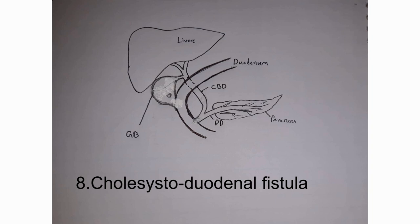However, there is also a cholecystoduodenal fistula. When the gallbladder inflammation is very severe, it creates an abnormal connection — a fistula — between the gallbladder and the duodenum. This is a cholecystoduodenal fistula.